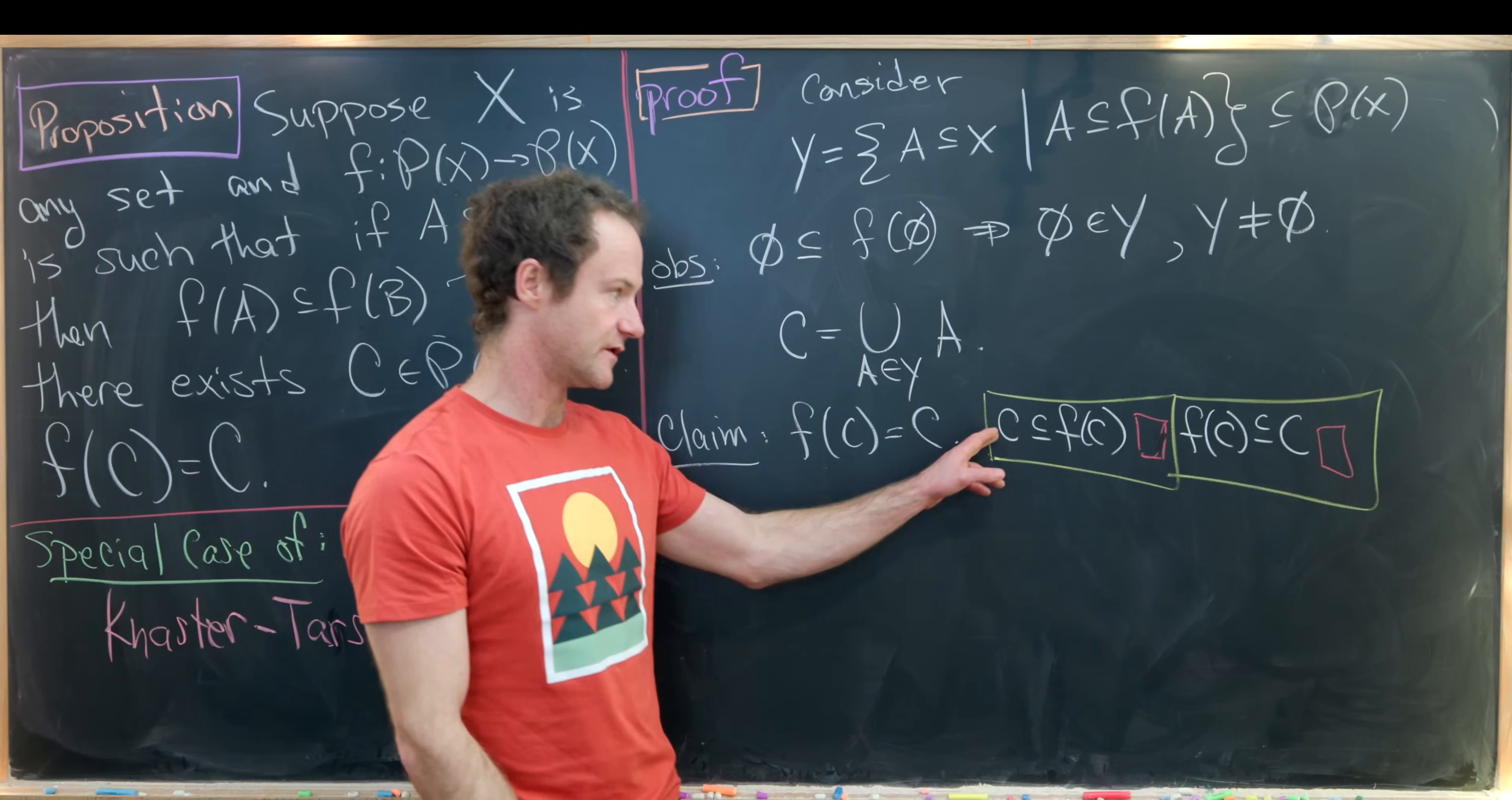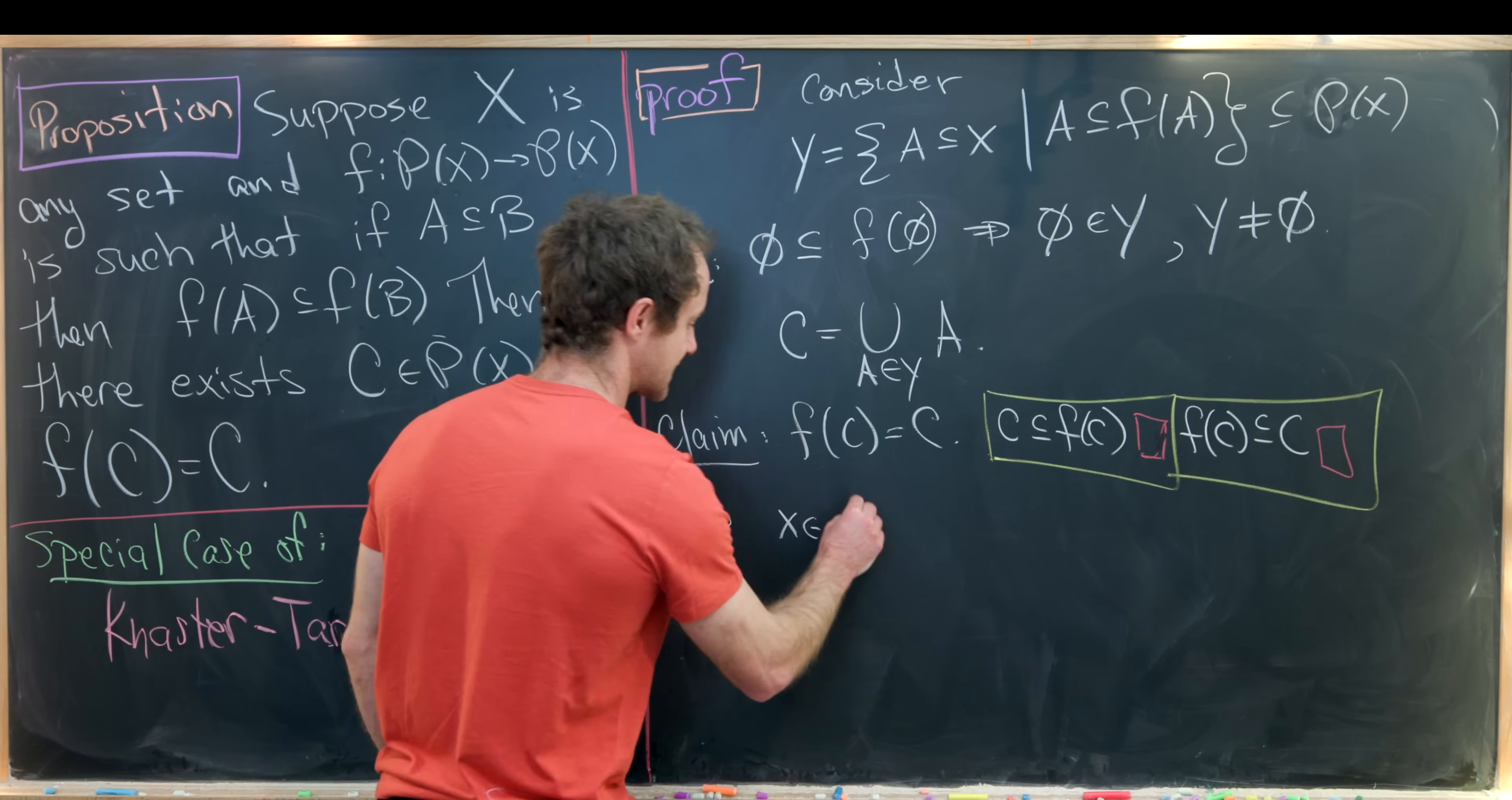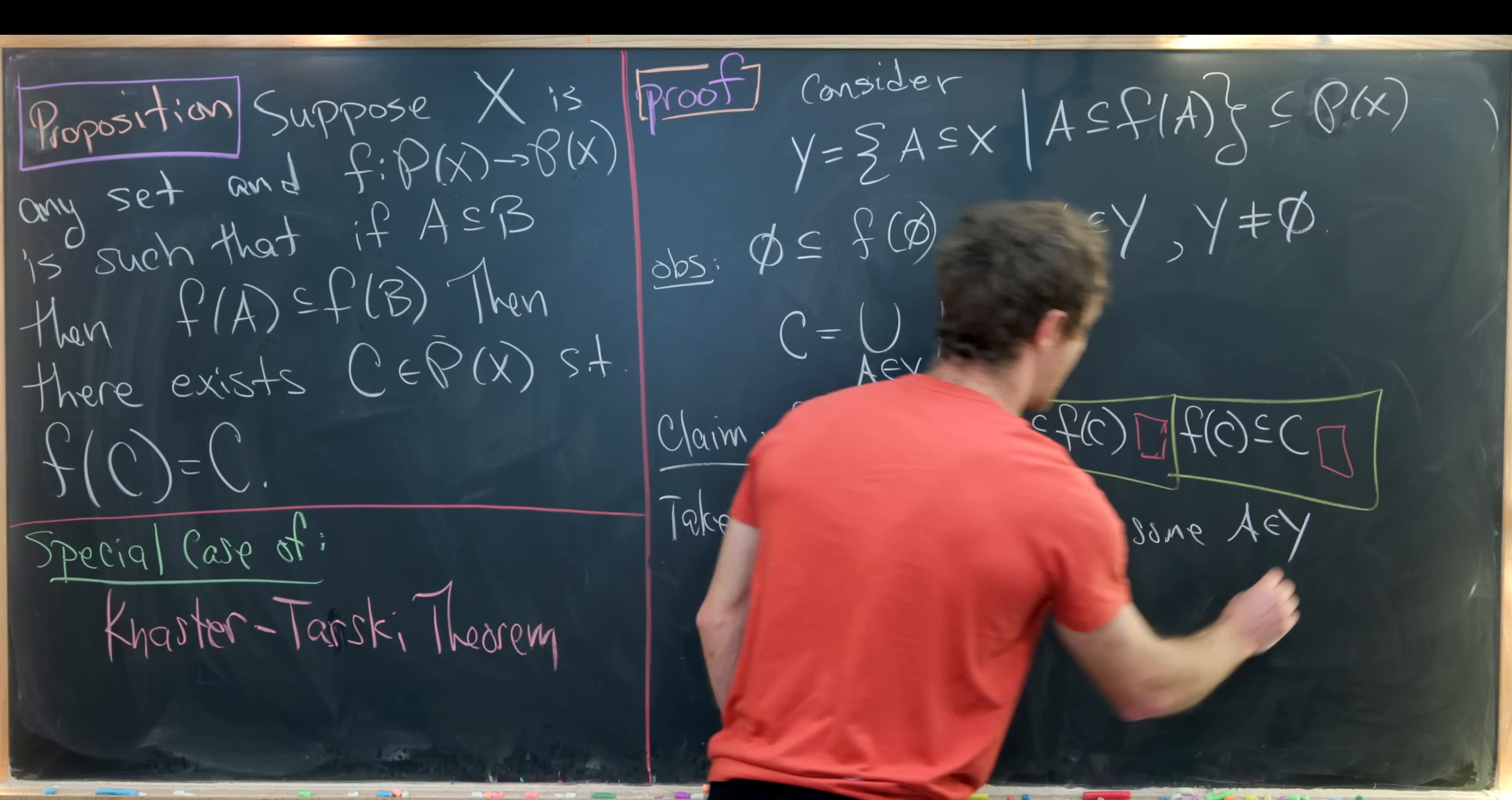Okay so how do we show that c is a subset of f of c? Well we take an element from c and show that it must be in f of c. So let's take an element, I'll call it little x which is in c.